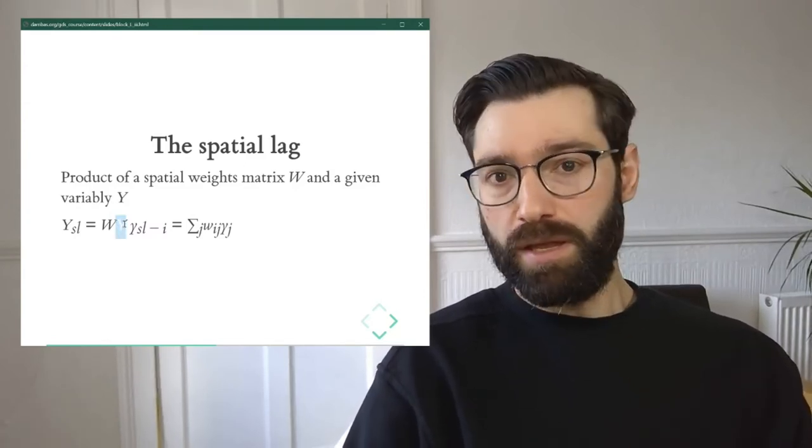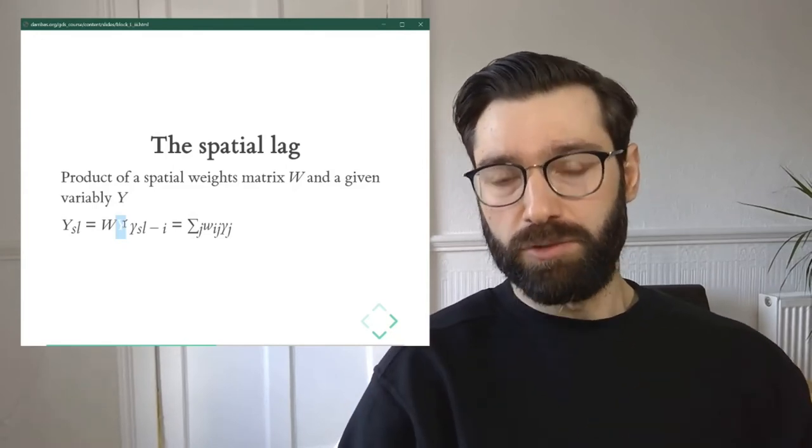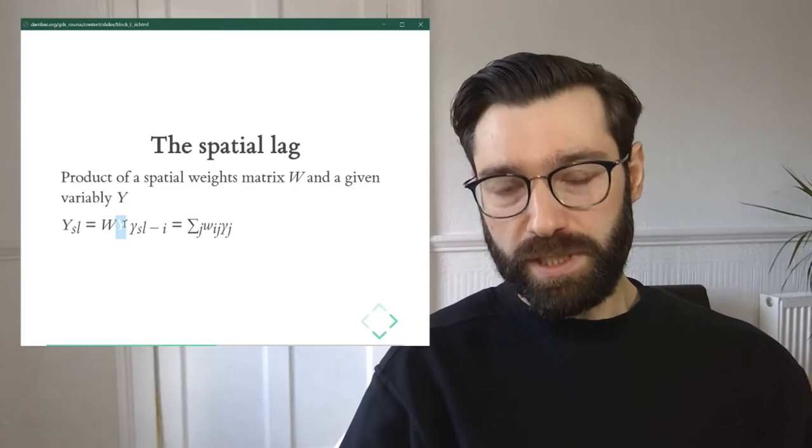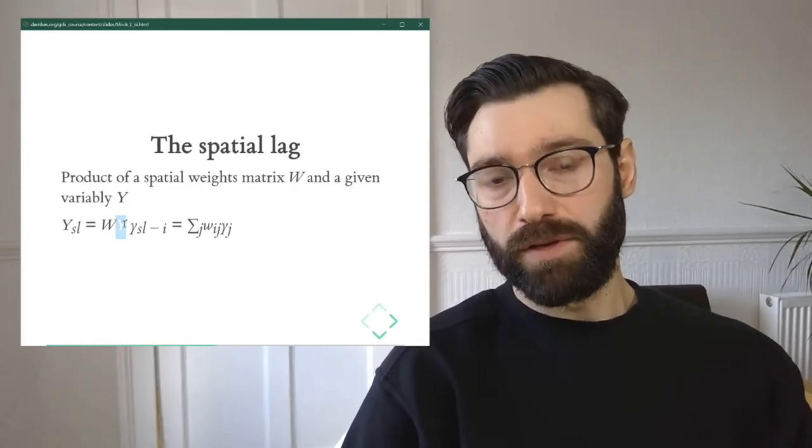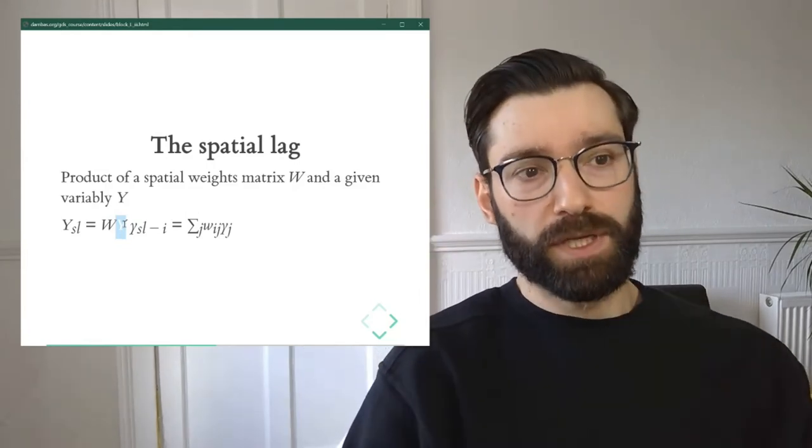And this y could be population, could be income, could be deprivation, could be the intensity of some tree species, could be the presence of an animal species, anything that has location attached to it.